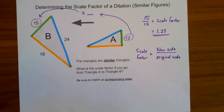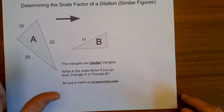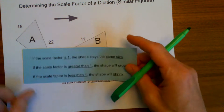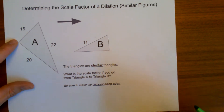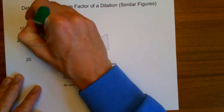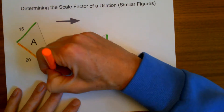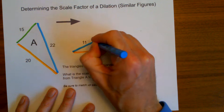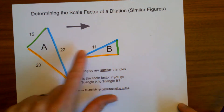So the scale factor was 1.25. Let's try one more. What is the scale factor here? I'm going from triangle A to triangle B, but this time it's shrinking — going from a larger triangle down to a smaller one. So I need a scale factor that is less than one. Before calculating, let's match up corresponding sides. The smallest side of triangle A matches up with the smallest side of triangle B, and 11 on triangle B matches up with 22 on triangle A.